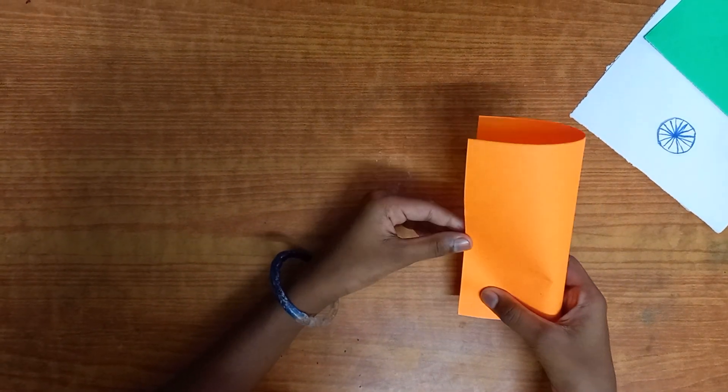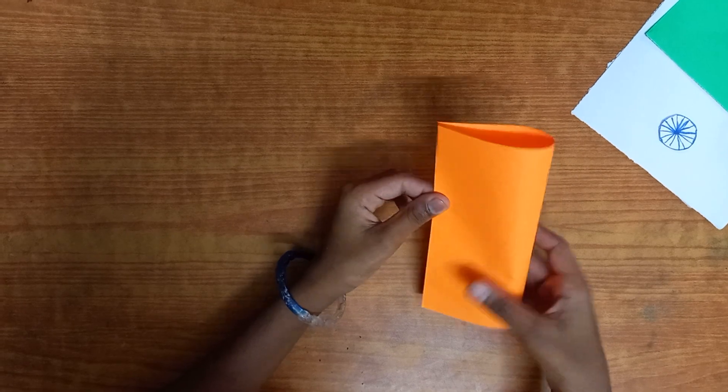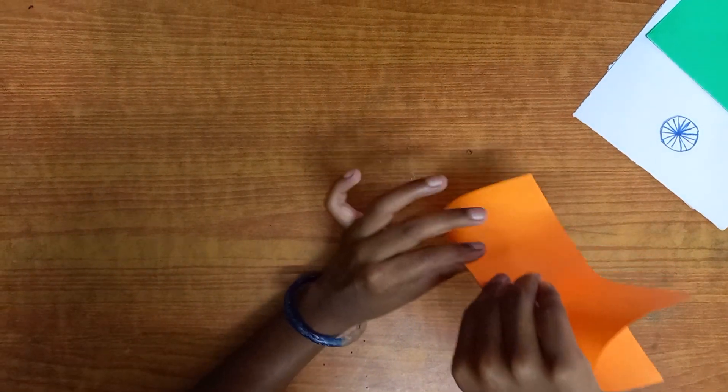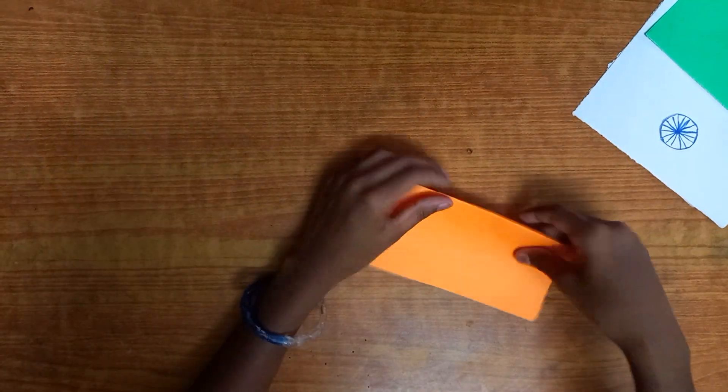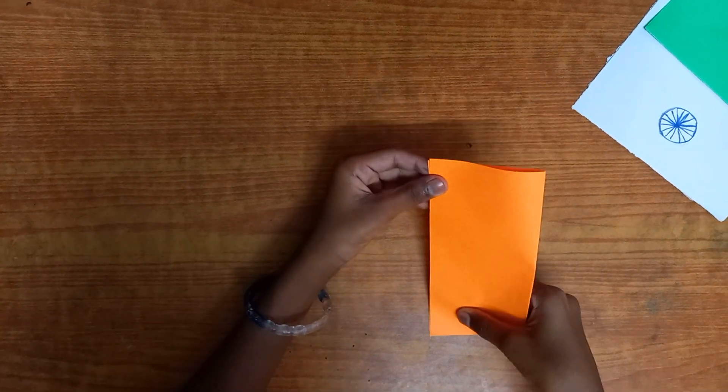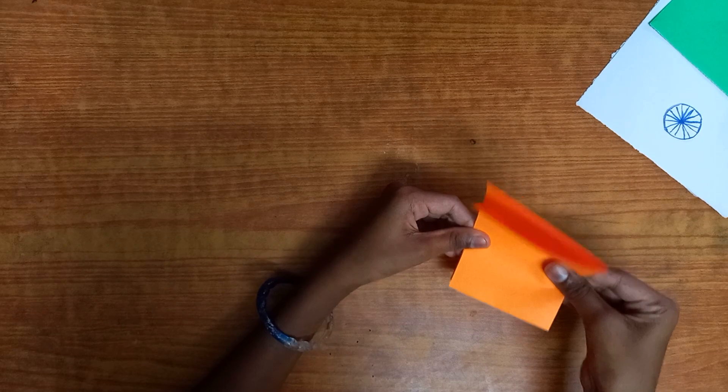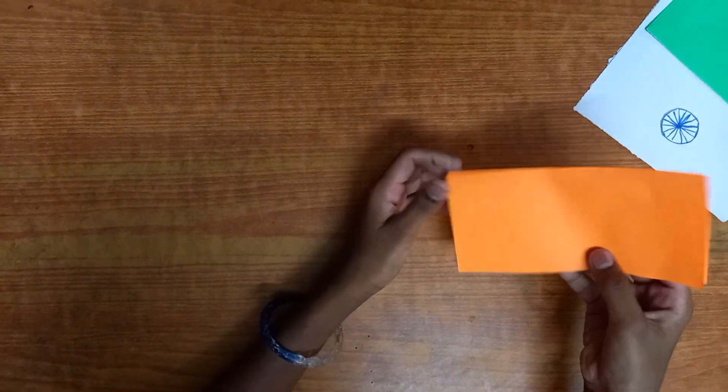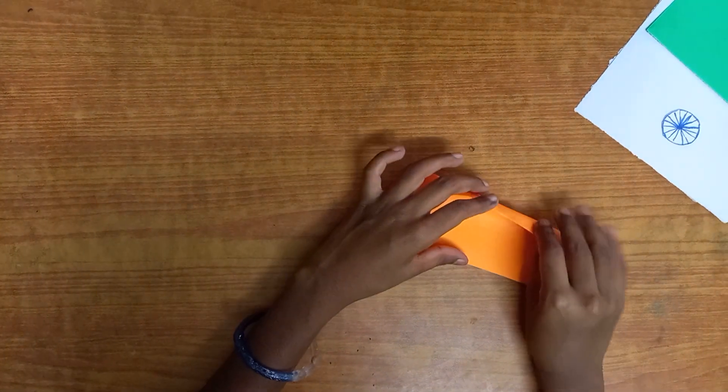Fold the paper in half like so. Try to make it as precise as possible because we are going to make it into kind of like a hand fan. So try to make it precise, and then again fold down